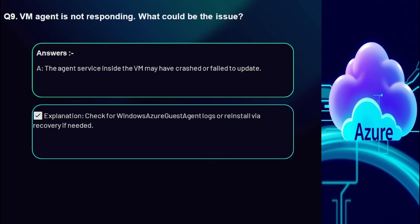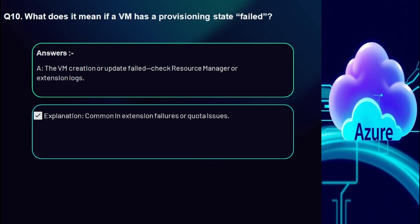Question 10: What does it mean if a VM has a provisioning state of 'Failed'? The VM creation or update failed — check the Resource Manager or extension logs for more details. In Azure, a provisioning state of 'Failed' indicates an error occurred during creation, update, or deployment of the VM or its associated resources such as network interfaces, disks, or extensions. As a fix, try adding a temporary tag to the VM and then removing it, which has been known to resolve provisioning state issues. If it persists, consider using the Redeploy option in the VM overview blade.